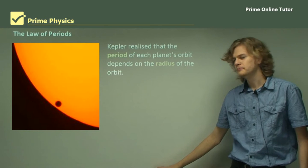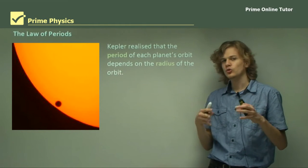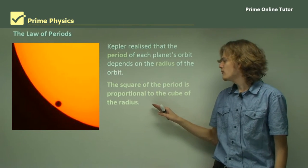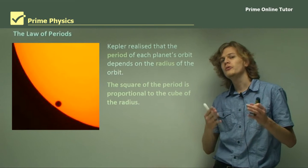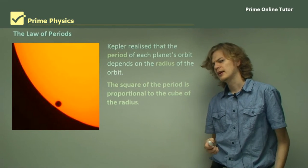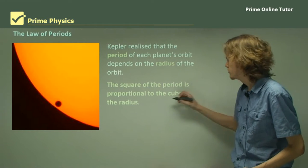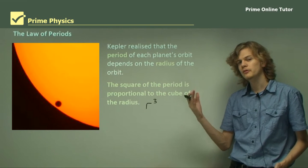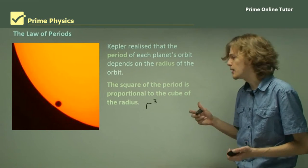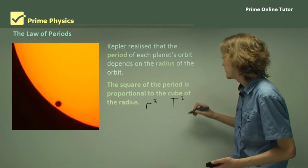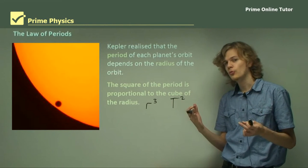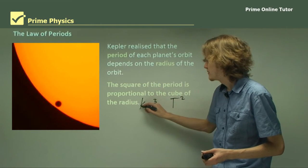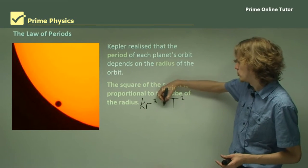Finally, we have the law of periods. Kepler realized that the period of each planet's orbit depends on the radius of the orbit. The square of the period is proportional to the cube of the radius. We have the radius cubed, R³, and we have the period squared, T². If the square of the period is proportional to the cube of the radius, then Kr cubed equals T squared.